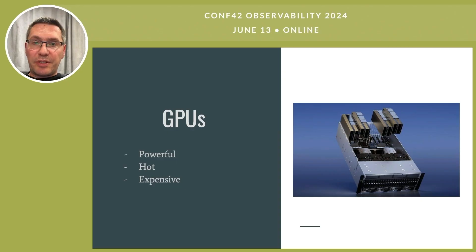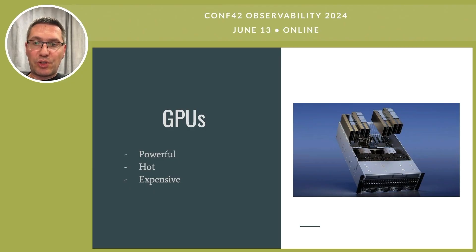We are now witnessing the rise of ML and AI technologies, and more and more data center capacity is being allocated to GPUs. Although physically small, GPUs consume significant amounts of electricity — one GPU node can consume more than 8 kilowatts of power — and produce the same huge amount of heat. To address this, data centers must upgrade their electrical and cooling infrastructure to support increased power and cooling demands.